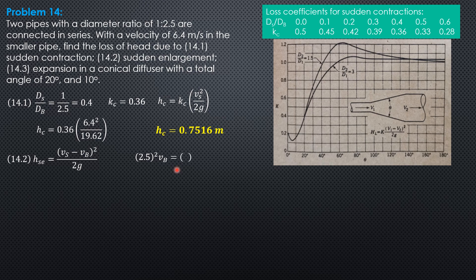2.5 squared velocity in the bigger pipe equals 1 squared velocity in the smaller pipe 6.4. The mean velocity in the bigger pipe is 1.024 meters per second.